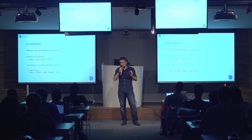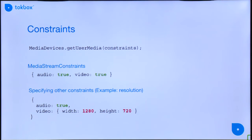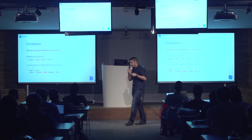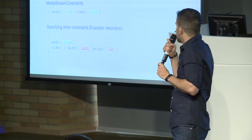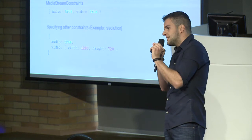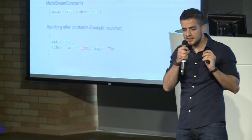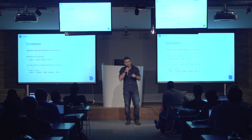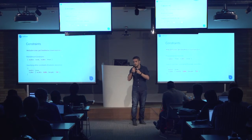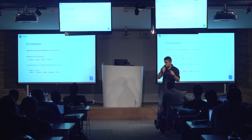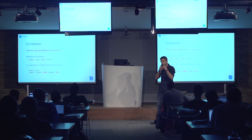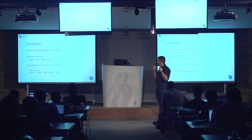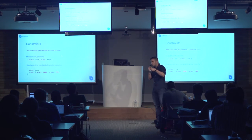Once I have the devices, the next part is passing them to the getUserMedia call so I can specify the microphone and camera. The first thing to understand is the concept of constraints. When you call getUserMedia, you can pass an object containing some parameters called constraints. There are two basic media stream constraints: audio and video. You simply specify true or false for audio or video, but you can also specify additional constraints. For example, I can set audio to true and for video specify a resolution of 1280 by 720.